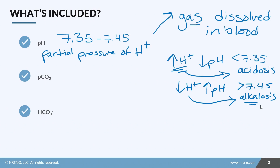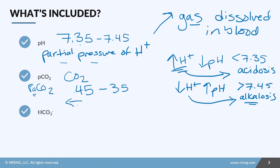Next we have PCO2, also written PaCO2 to indicate it's arterial — the partial pressure of carbon dioxide in the arterial blood. I always write the normal range backwards as 45 to 35, so the same numbers as pH but reversed. The normal PaCO2 is 35 to 45. Higher than 45 is acidosis; less than 35 is alkalosis. So CO2 equals acid.